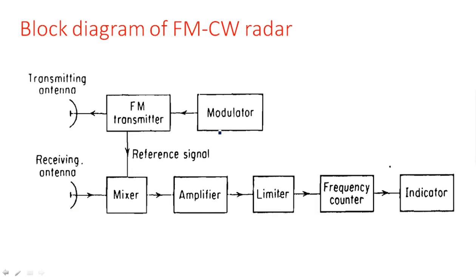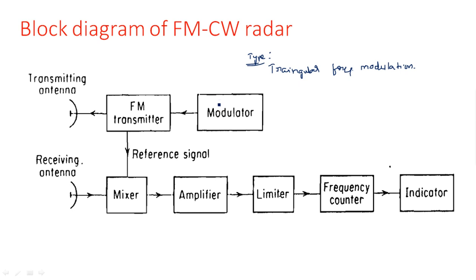Looking at the block diagram of FMCW radar: the transmitted signal is a frequency modulated continuous wave. A carrier signal at frequency f0 is modulated using triangular frequency modulation. A modulator multiplies the carrier signal with the message signal, and then an FM transmitter amplifies and transmits the signal.